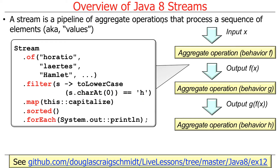Here's our simple example. This program will take a list of character names from the play Hamlet — the classic William Shakespeare play. It's going to only continue processing character names that start with the letter H, either uppercase or lowercase, filtering out anything that doesn't. It will then capitalize each name so they start with a capital letter followed by all lowercase. Then it'll sort them and print them all out after they're sorted. That's the stream: take the list of character names, filter out anything not starting with H, capitalize consistently, sort, print.